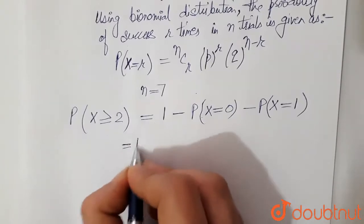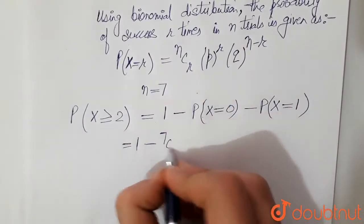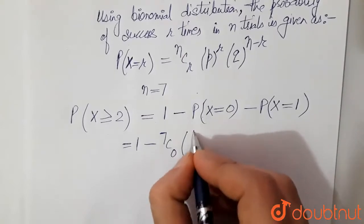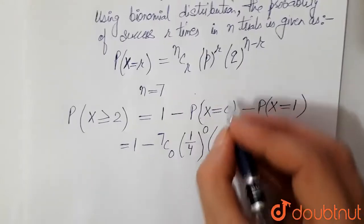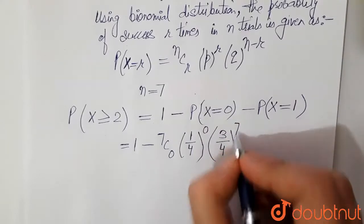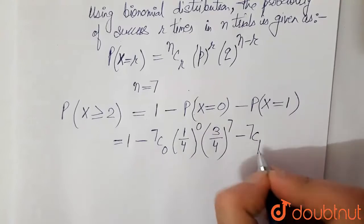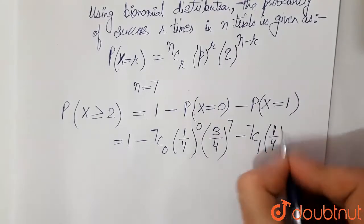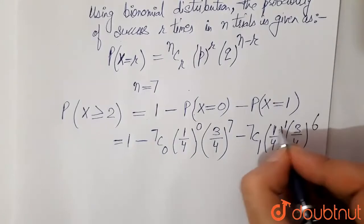From this formula now, this becomes 1 minus 7C0, p is 1 by 4, p to the power 0 and q is 3 by 4, 3 by 4 to the power 7, minus 7C1, 1 by 4 to the power 1 and 3 by 4 to the power 6.